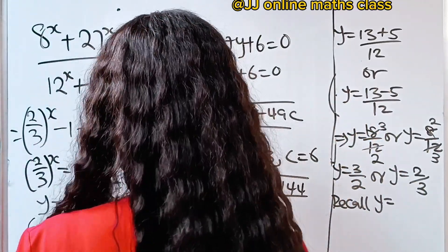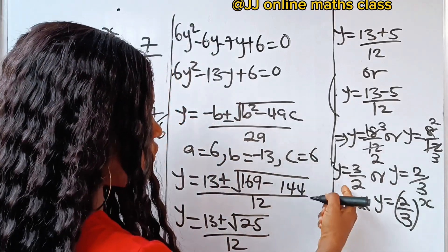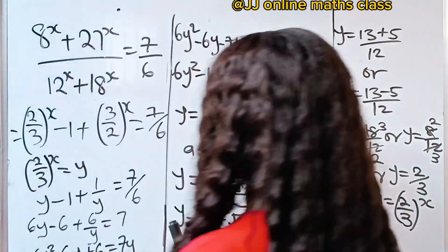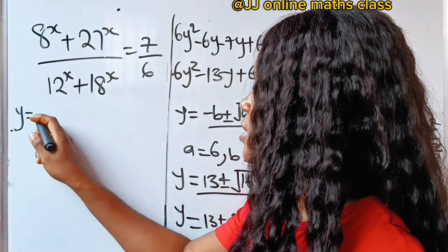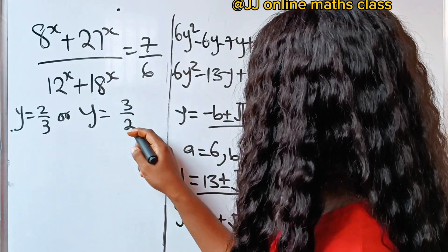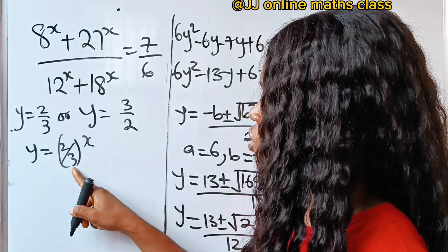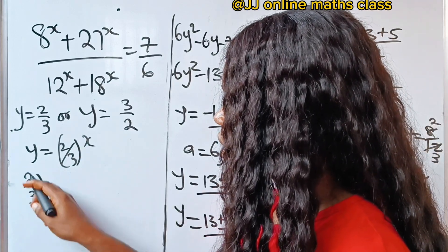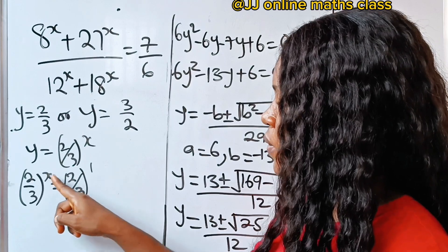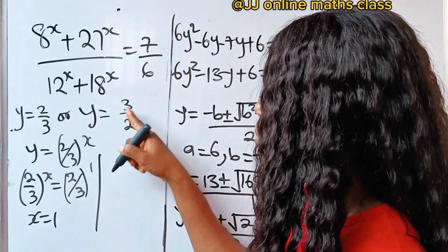Recall that y equals (2/3)^x. For the first value, y = 2/3: so (2/3)^x = 2/3, which equals (2/3)^1. Since the bases are the same, we equate the powers: x = 1.